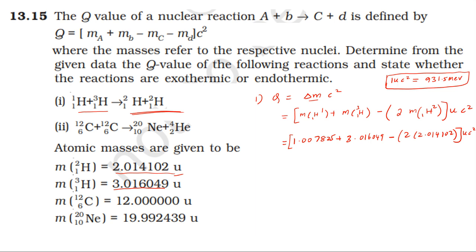The mass defect comes out to minus 0.004333 u. Into C squared value, 931.5 MeV per u, the answer comes out to nearly minus 4.03 MeV.